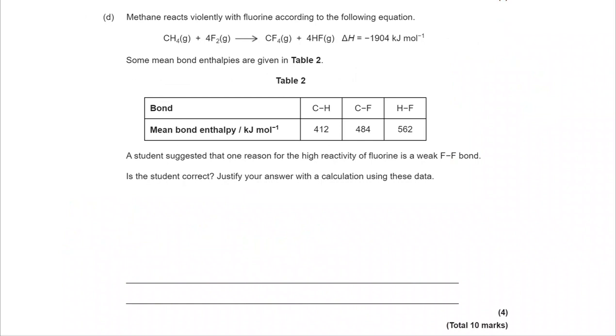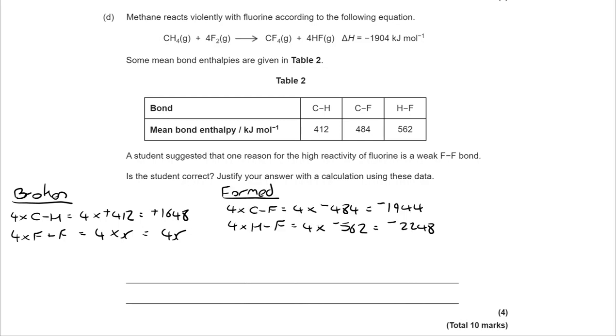You need to do a little bit of calculation to get to your answer. We know that we are breaking four C-H bonds. They're at 412 each, that's 1648 or plus 1648 because breaking bonds is endothermic and therefore positive. We're also breaking four F₂s. We want to know what that is, so we've got our 4X and I'm calling it 4X because it's four times the mean bond enthalpy.